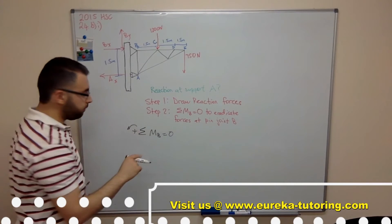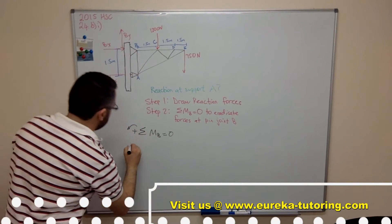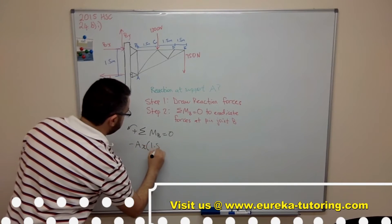So it's going to be negative and it's going in clockwise. So minus Ax times 1.5.